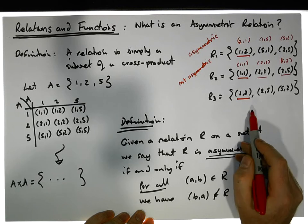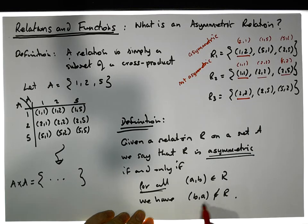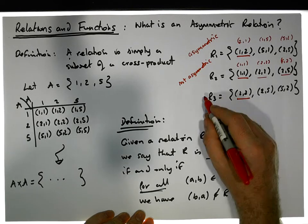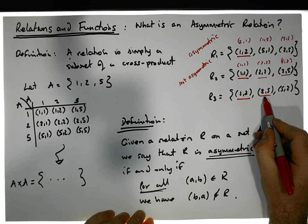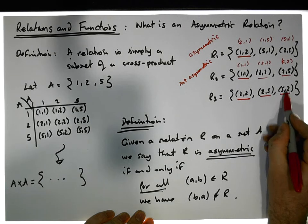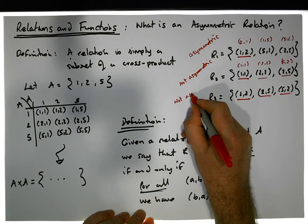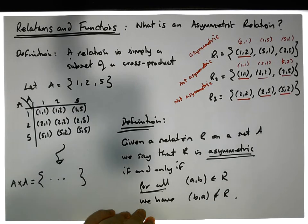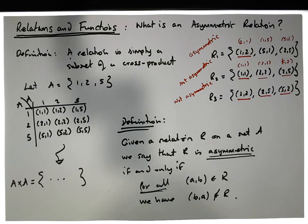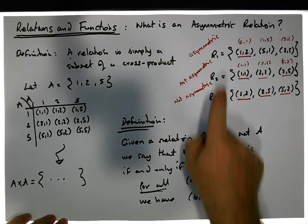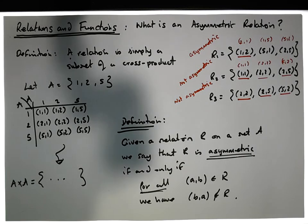Finally, R3: it contains (2,2), and flipping it gives (2,2) which is in the set — a violation. Also, R3 contains both (2,5) and (5,2), so flipping either gives the other, which is present — more violations. There are three reasons why R3 is not asymmetric. Thanks for watching — the next video will deal with anti-symmetric relations. This was Jonathan Lambert with the Mathematics Development and Support Service at the National College of Ireland.